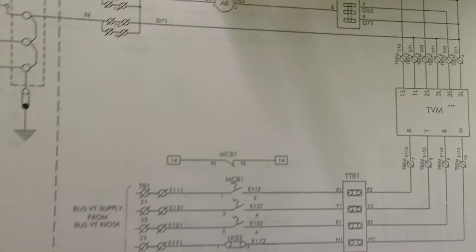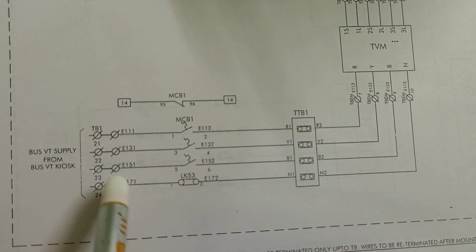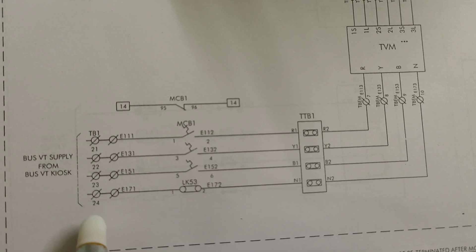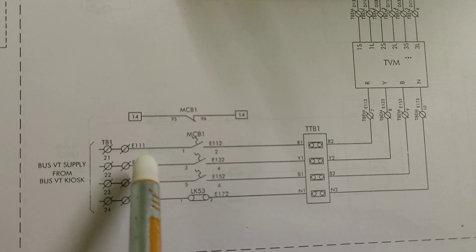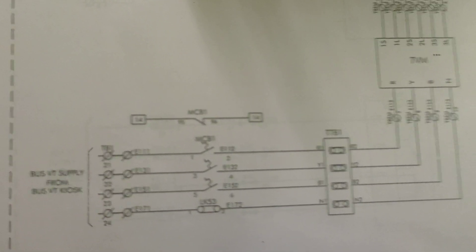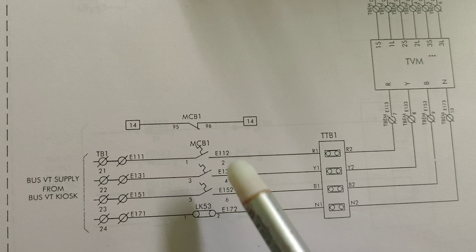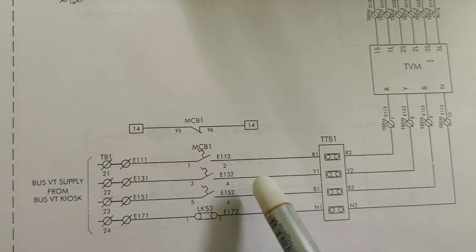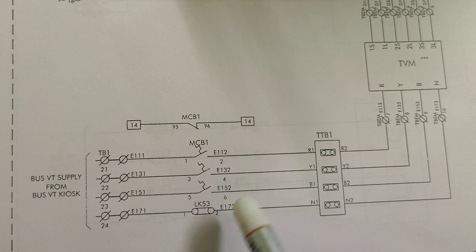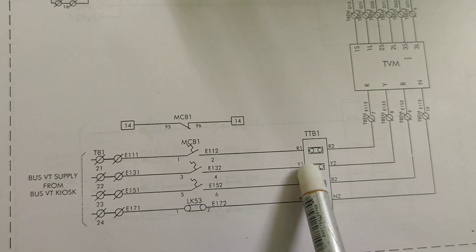The TVM is the tie vector meter. One side of the TVM connection comes from the VT — voltage transformers. From the VT, four wires come out: E111, E131, E151, and E171. An MCB (MCB1) is used before the TTV. After the MCB, the ferrule numbers become E112, E132, E152, and E172. This connection goes to the TTV with terminals R1, Y1, B1, and N1, converting to R2, Y2, B2, and N2.